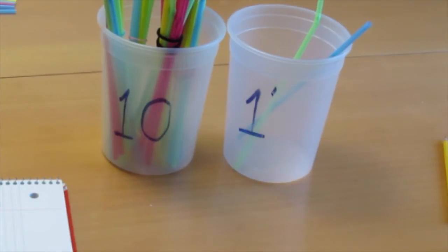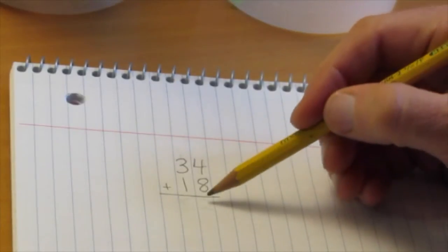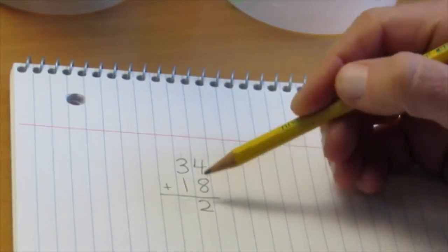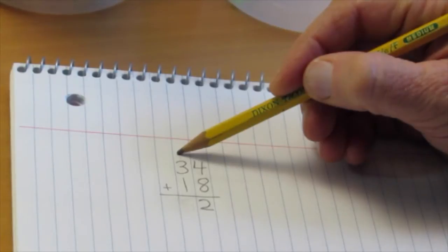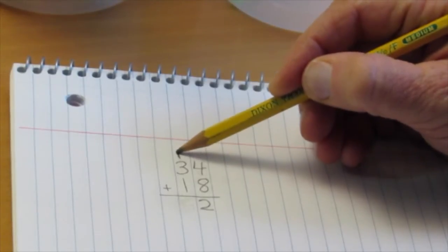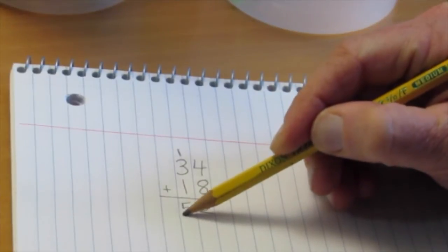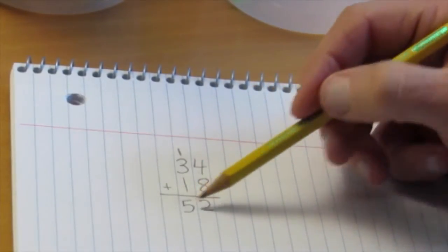On paper, that looks like this. Four plus eight is 12. I put two in the ones bucket and I carry a one, or in other words, one group of ten, over to the tens column. One plus three plus one is five. So 34 plus 18 is 52.